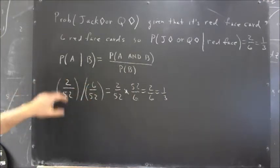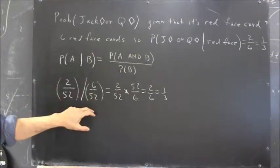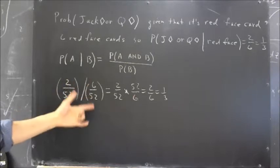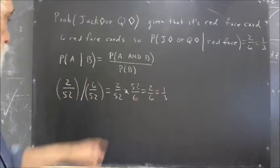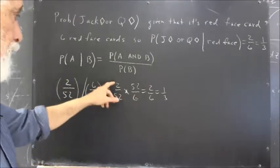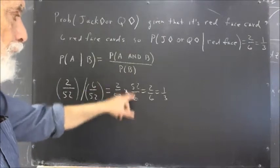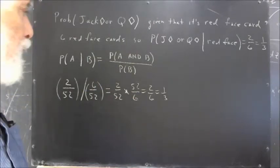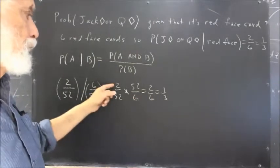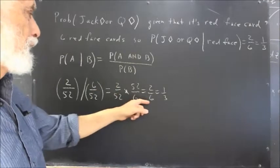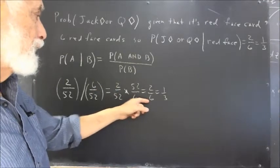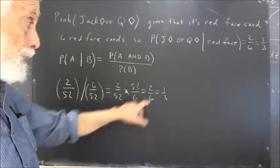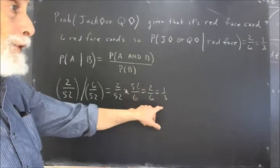If we divide two out of 52 by six out of 52, we invert the six out of 52, and we end up multiplying two out of 52 times 52 out of six, and that gives us two divided by six. The fifty-twos divide out and we end up with two over six, and that's one-third.